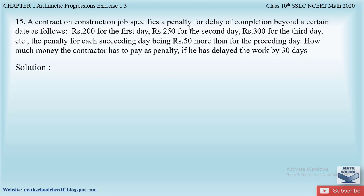So a construction job specifies a penalty for delay: for the first day rupees 200, for the second day rupees 250, for the third day rupees 300. Likewise it continues, with each succeeding day rupees 50 more than the preceding day. We have to calculate the total penalty sum when the work is delayed for all 30 days.